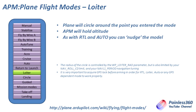Loiter is what happens when return to launch comes home. The plane will circle around the point where you entered the mode — if you were in the middle of the field and clicked the switch, the plane would prescribe a circle around that point. APM will hold altitude so it won't sink or rise too much. You can nudge the model using the sticks to reposition it slightly. The radius of the circle is controlled by the WP_LOITER_RAD parameter — make sure it's appropriate for your aircraft size.